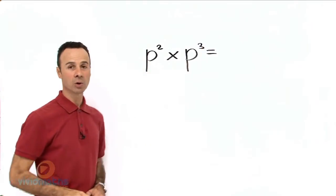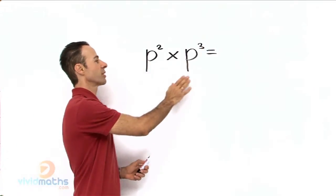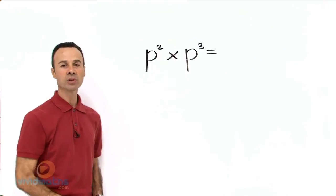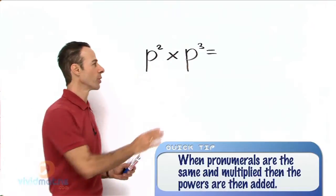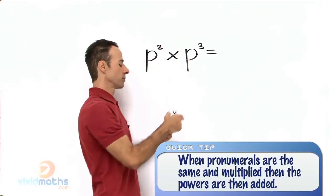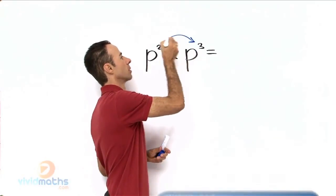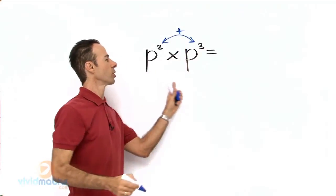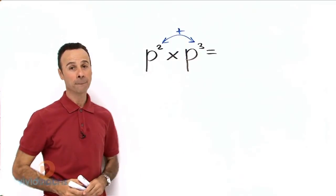In this particular law, when we have factors that are exactly the same, what we do with the powers is we add them when they are being multiplied. So we add the powers when the common factors are being multiplied.